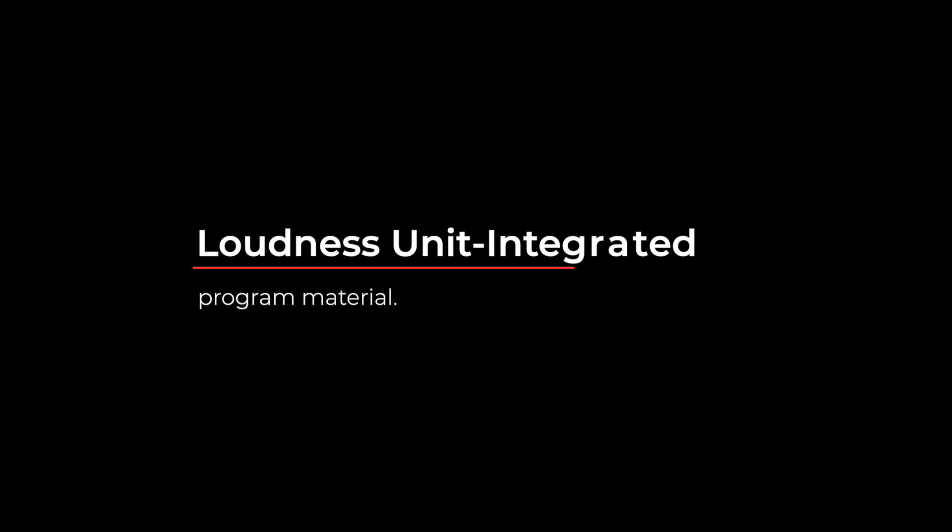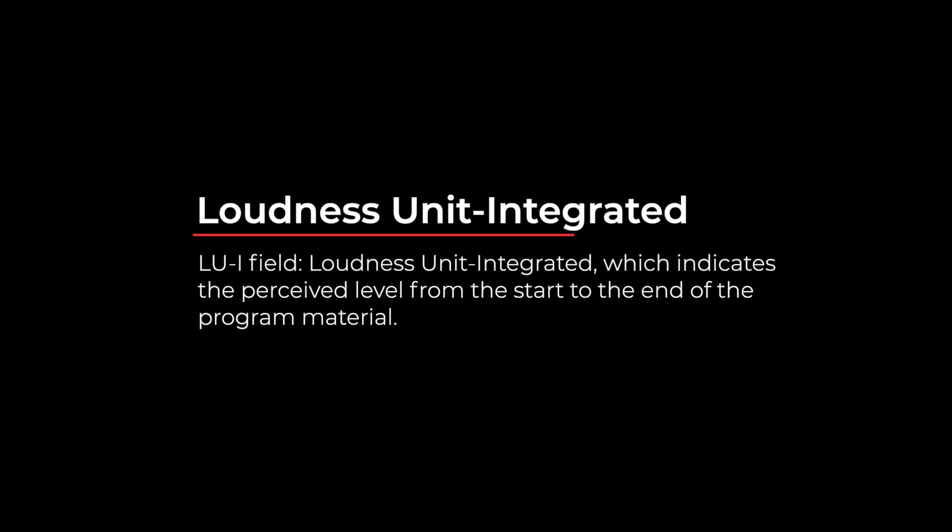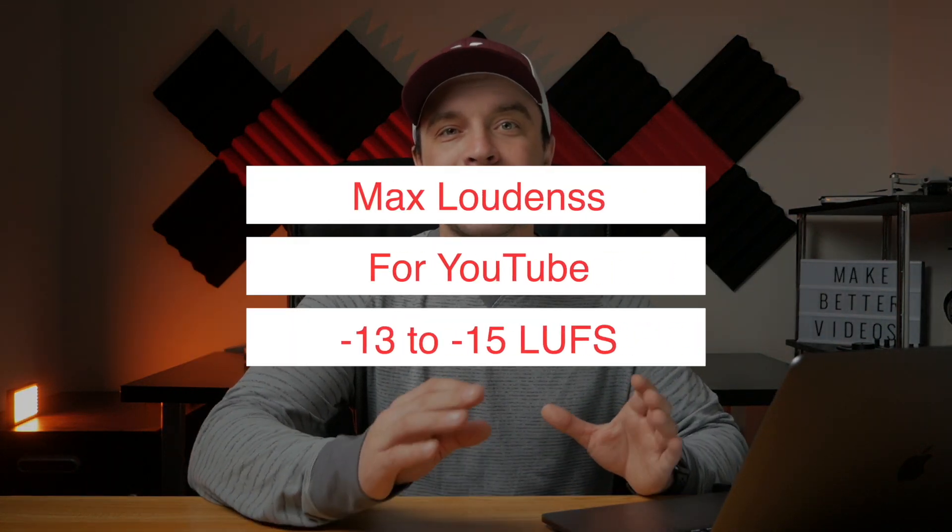Each loudness unit is equal to 1 decibel. What we're going to focus on in this video is the loudness units integrated field, which indicates the perceived loudness level for your entire video, and true peaks — the maximum level the signal reaches, or the loudest part of your video. The maximum loudness for uploading to YouTube is negative 13 to negative 15 LUFS. That's the maximum loudness allowed, but to leave ourselves a little headroom, we'll aim for negative 16 LUFS.